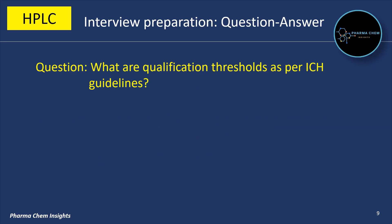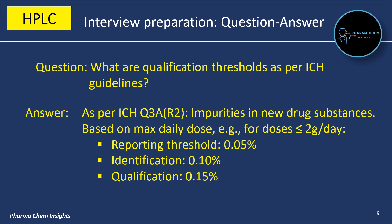Next question: what are the qualification thresholds as per ICH guidelines? As per ICH Q3A R2, for doses less than or equal to 2 g/day: reporting threshold is 0.05%, identification threshold is 0.10%, and qualification threshold is 0.15%.